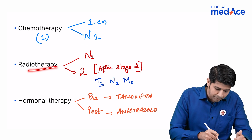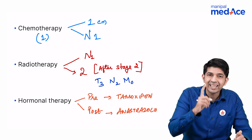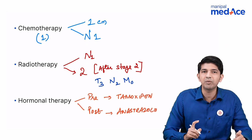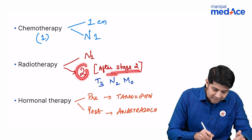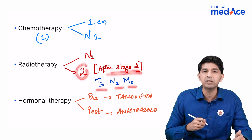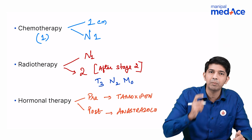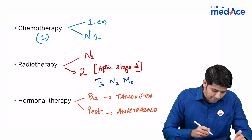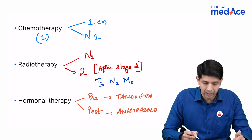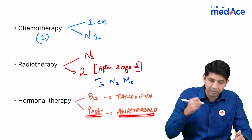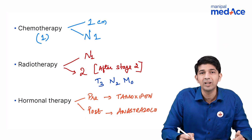For radiotherapy, remember 1 and 2. N1 — you're going to give radiotherapy. Anything beyond stage 2, that is T3, N2, M0 — you're going to give radiotherapy. For premenopausal women you can give tamoxifen, and for postmenopausal you're going to give anastrozole. This is in short about how to manage a patient with CA breast. Thank you.